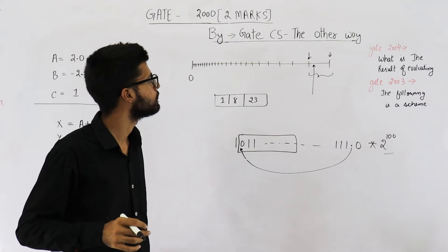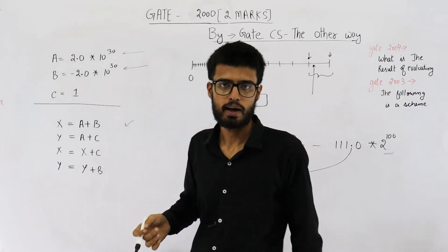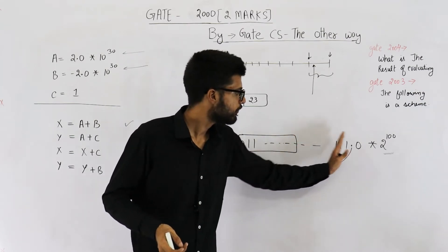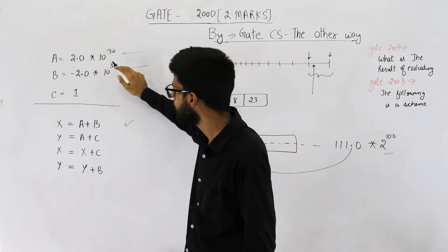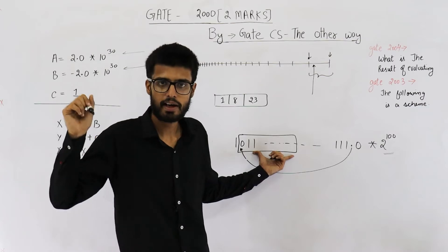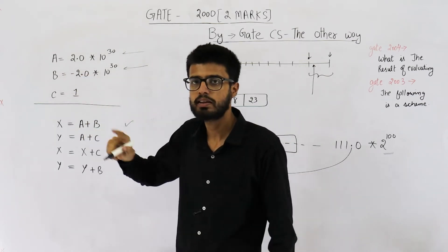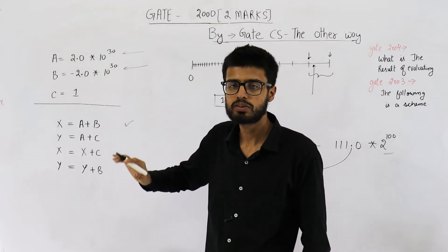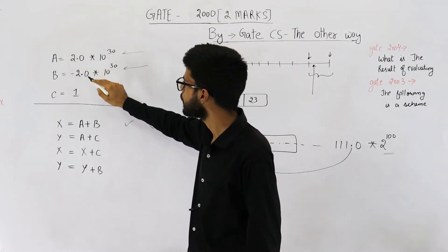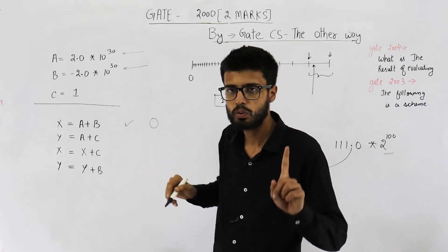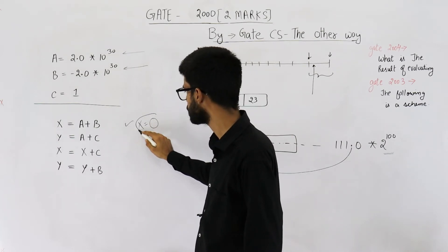Now let's move on to the first line of code. We don't know the exact values of A and B because only 23 bits were saved and the rest was neglected. However, the exact same approximated value is saved in A, and that same value is saved in B with the negative sign. When you add them, you get 0. Because in IEEE representation, both A and B differ only by one bit — the sign bit. Their magnitudes are equal. So X is updated to 0 after executing the first line.